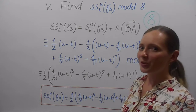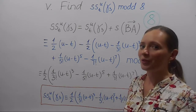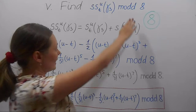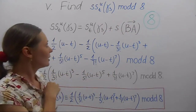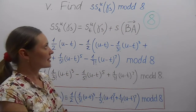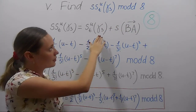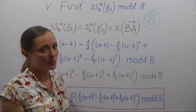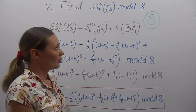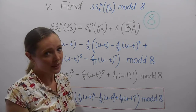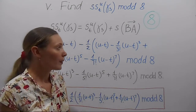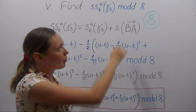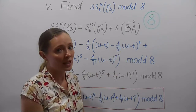Finally, we need to find the slight sine area of the curve γ3 mod d8. By definition, this slight sine area is the sine area of this curve plus the sine area of the oriented segment BA, where A is γ3 of t and B is γ3 of u. This is the same as the sine area of the curve minus the sine area of the oriented segment AB.